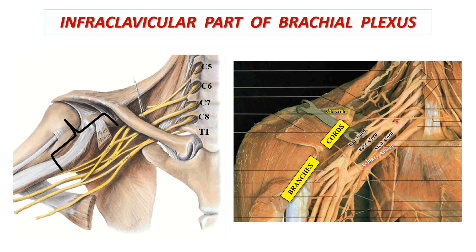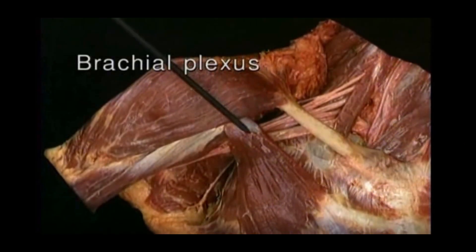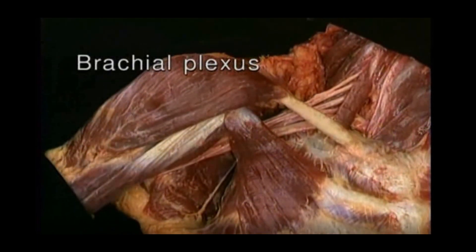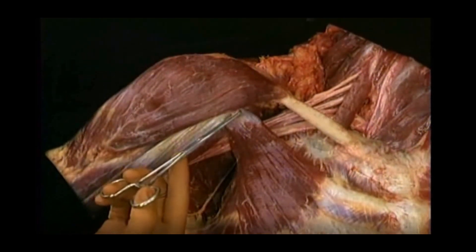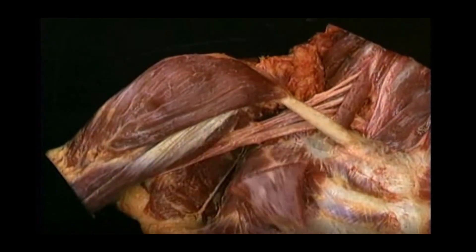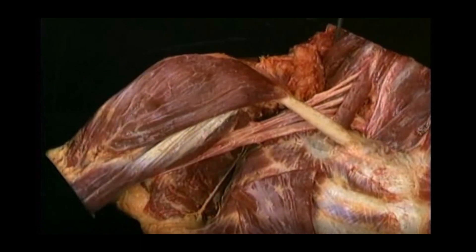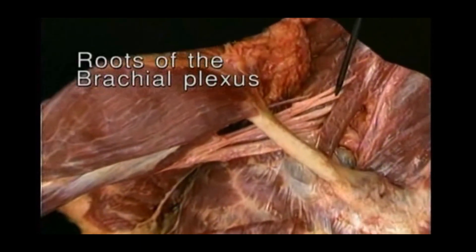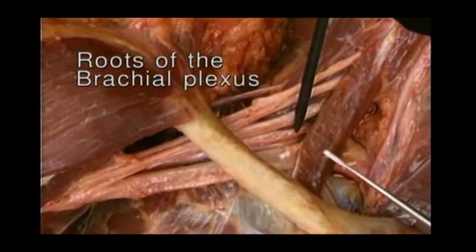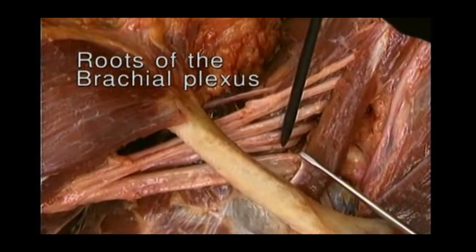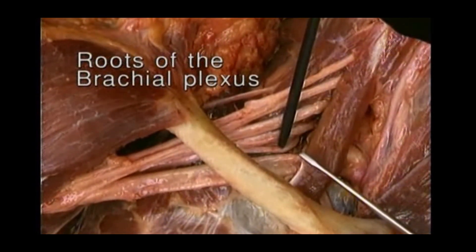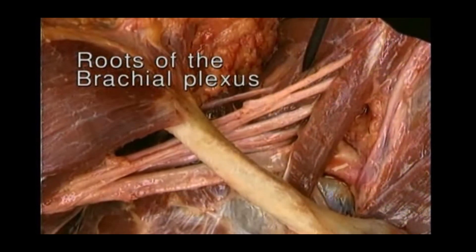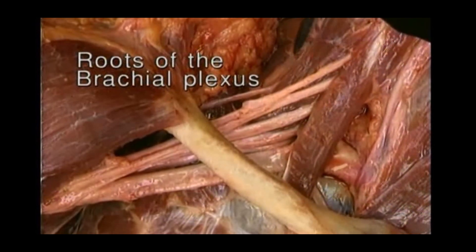Let's understand this by looking at the following video clip. Here is the brachial plexus from the posterior triangle of the neck entering into the axilla. Here is the pectoralis minor muscle reflected. The supraclavicular part is composed of roots and trunks. The roots are formed by ventral rami of C5 to C8 and T1 spinal nerves, which lie between the scalenus anterior and scalenus medius muscles of the neck.